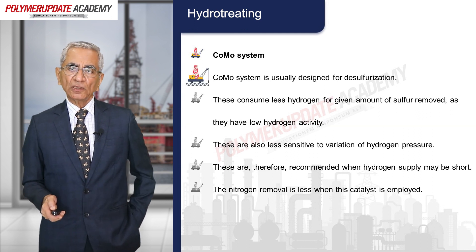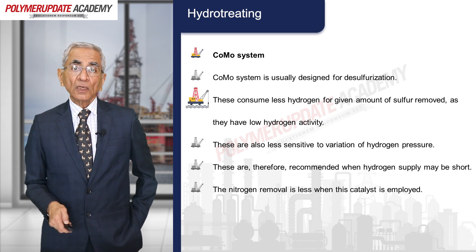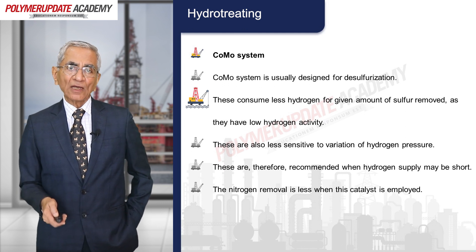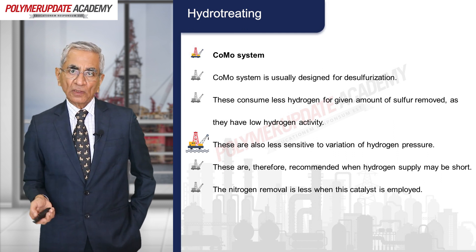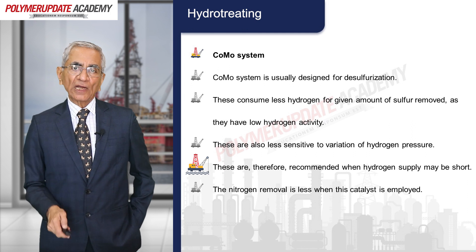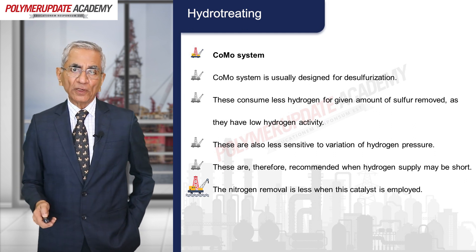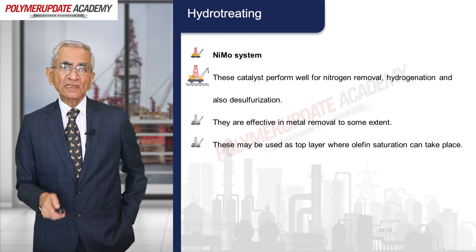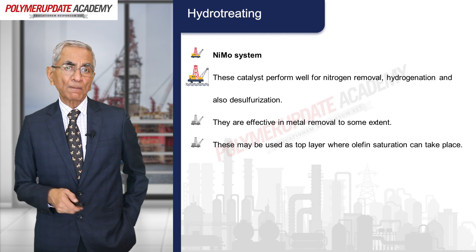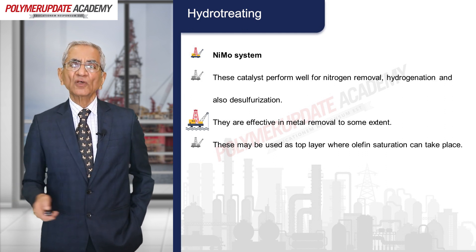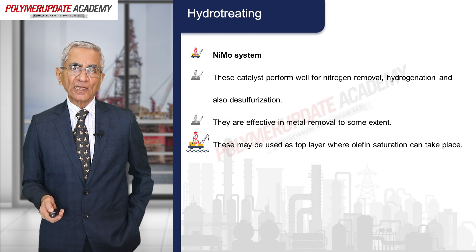The cobalt-molybdenum (Co-Mo) catalyst system is usually designed for desulfurization. These catalysts consume less hydrogen for a given amount of sulfur removal due to their low hydrogenation activity, and are less sensitive to variations in hydrogen pressure — recommended when hydrogen supply may be limited. Nitrogen removal is less effective with this catalyst. The nickel-molybdenum (Ni-Mo) system performs well for nitrogen removal, hydrogenation, and desulfurization, and is effective in metal removal to some extent. It may be used as a top layer where olefin saturation takes place.